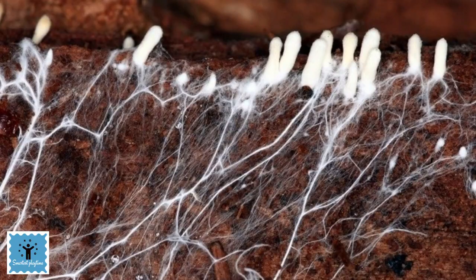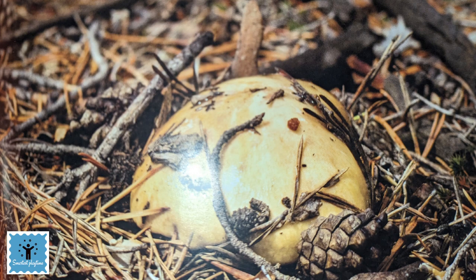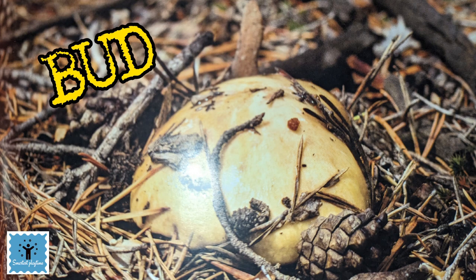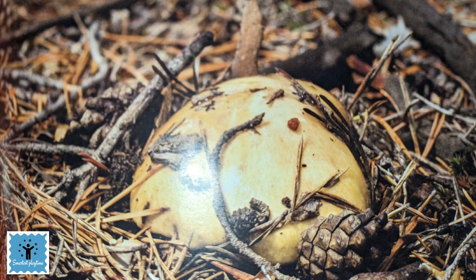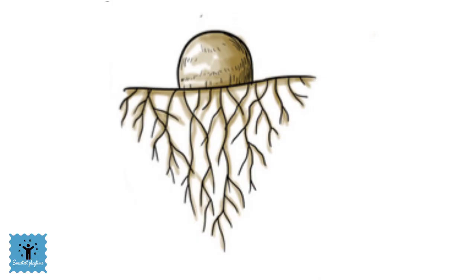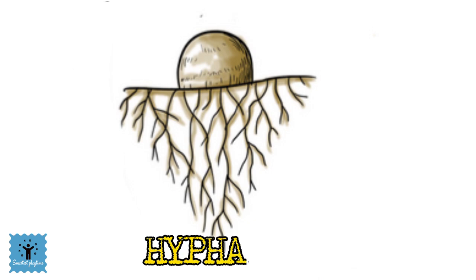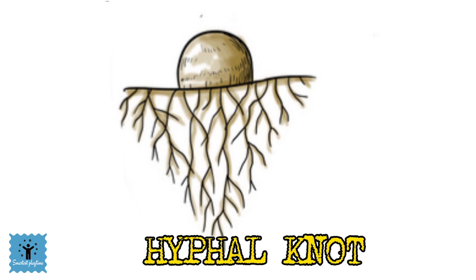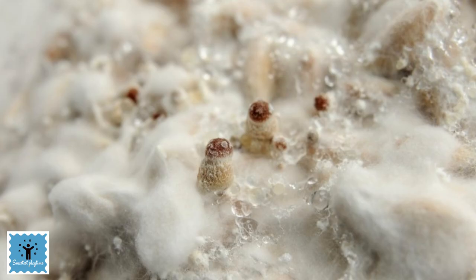The fungus waits until the conditions are right, then it gets ready to send up its fruit. The mycelium forms a small bud at the surface of the soil — this will become the new mushroom. This is the first stage of a mushroom fruit body, and it is called the hyphal knot.